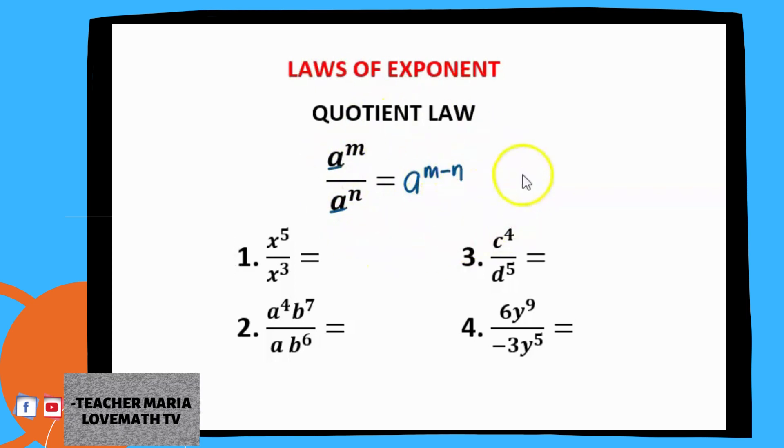Now, how are we going to apply that to our given? For number one, we have x raised to 5 divided by x raised to 3. Since they have common base, we are just going to copy the common base, which is x, and then subtract the exponents. So we have 5 minus 3. What is 5 minus 3? That's 2. So the exponent of our base x is 2. Our final answer is x raised to 2.